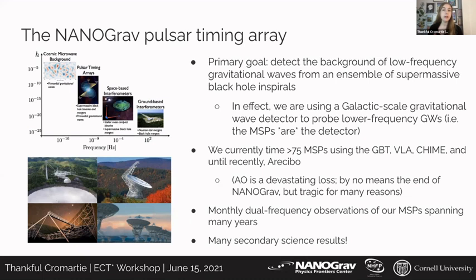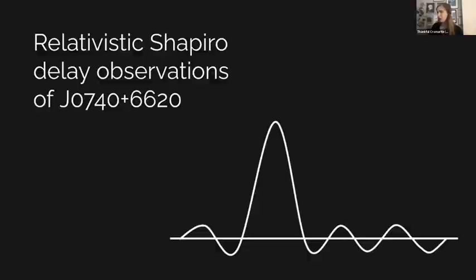The NANOGrav observing program consists of monthly dual-frequency observations of all millisecond pulsars. We're currently working on our 15-year dataset, so we have a really extensive, high-cadence millisecond pulsar dataset. That means not only do we have a great dataset for gravitational wave detection, but we're also able to get a lot of so-called secondary science out of it. I'm going to talk about one of those secondary science results.